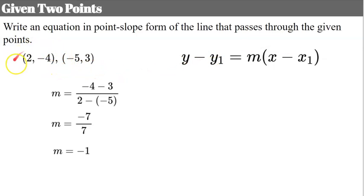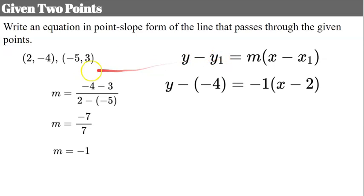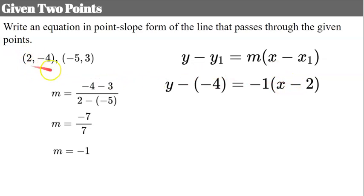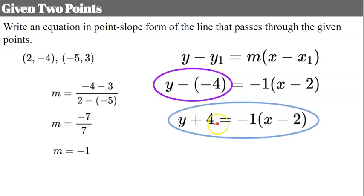Using the first point: y₁ is negative 4, so y minus negative 4; m is negative 1; and x minus x₁ which is 2, giving x minus positive 2. Simplifying: y plus 4 equals negative 1 times the quantity x minus 2. You could drop the 1 and just leave the negative sign.